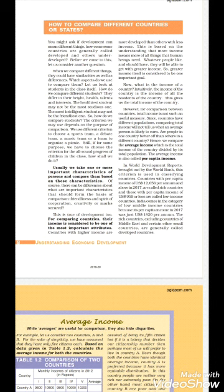When comparing nations and states, it is always important to compare using average income, not total income. This is because total income depends on the number of people living in that country. So rather than comparing total income, we compare average income, which is calculated as total income of the country divided by its total population. This average income is also called per capita income.